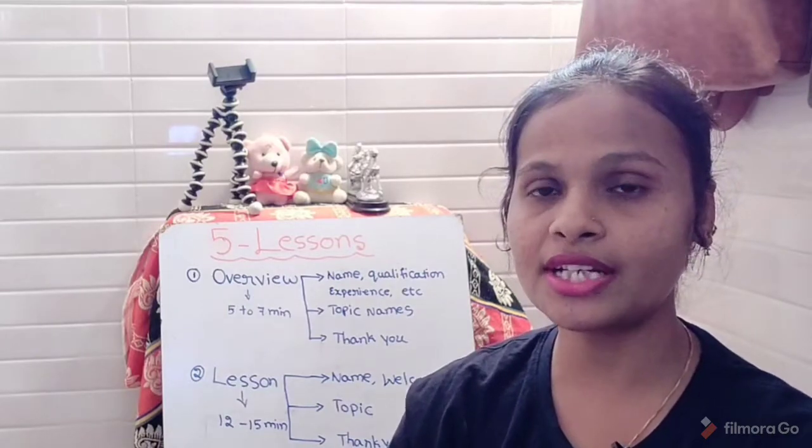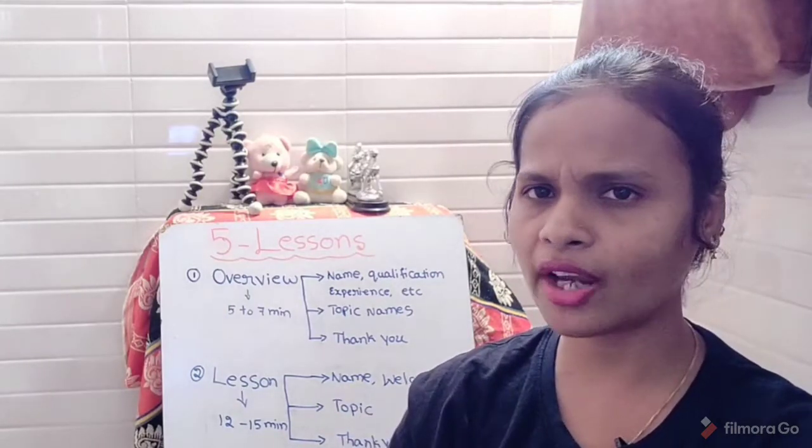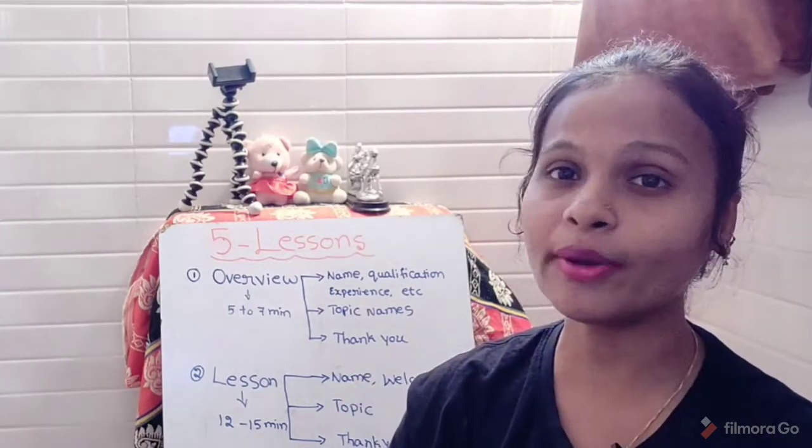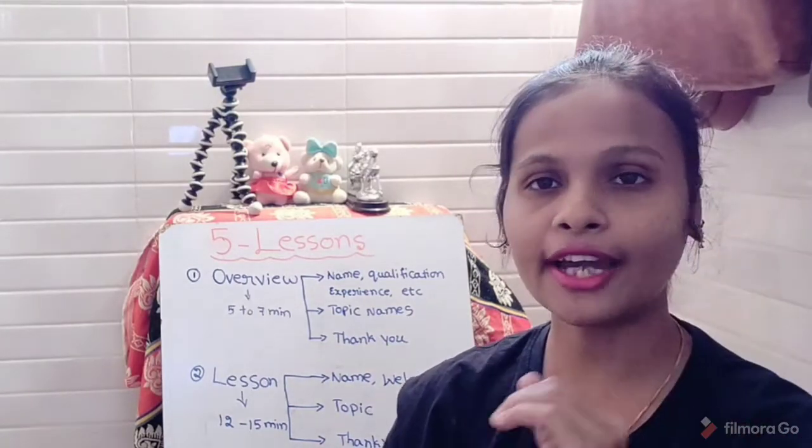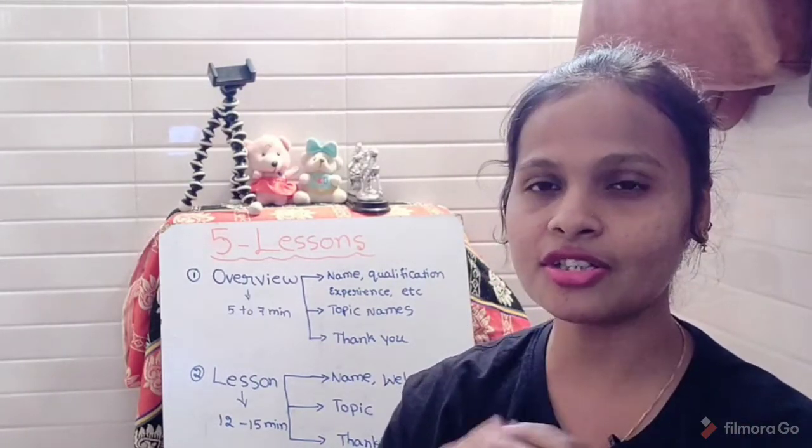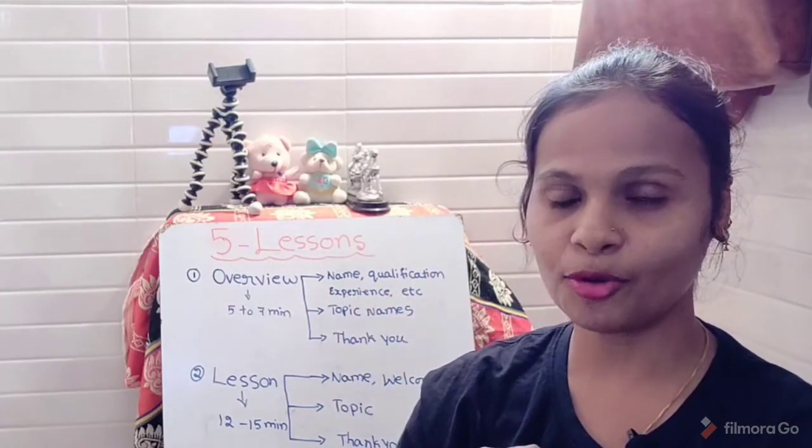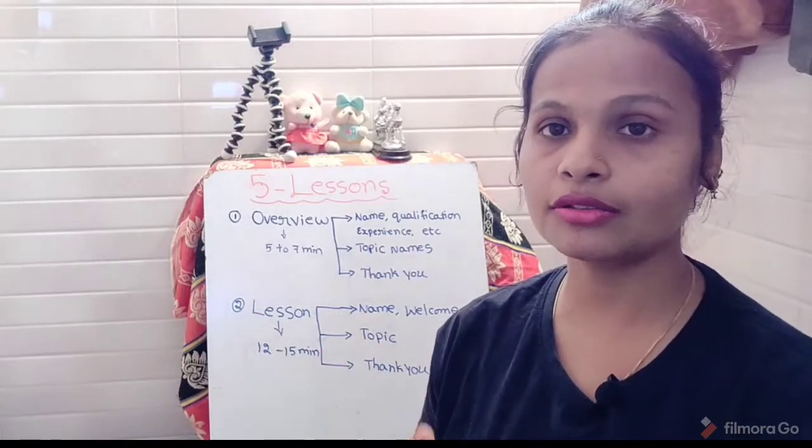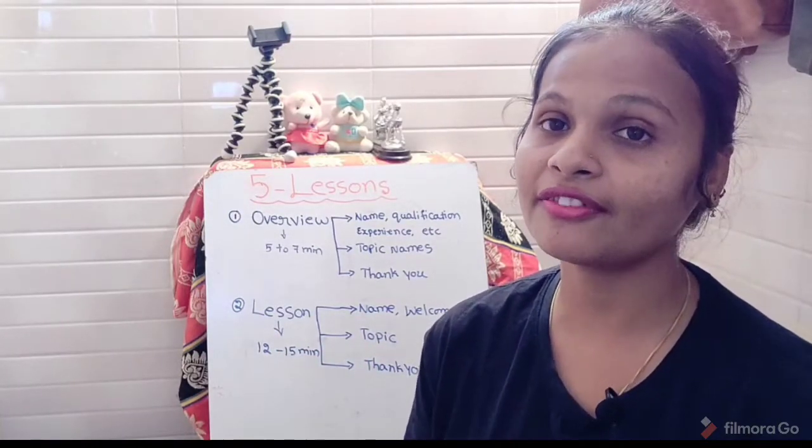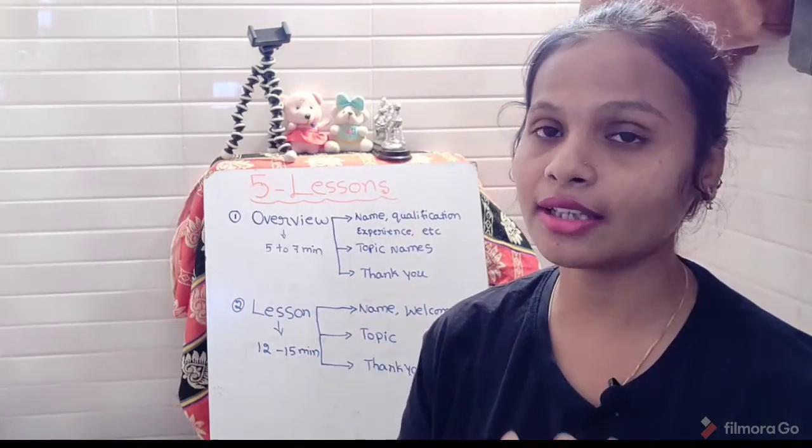12 to 15 minutes. If it is more than that, okay, no problem. But it should not be less than 12 minutes. So like that, you just make five lessons and you submit to the an academy platform. Follow all these steps while doing the full lessons course and definitely your course gets selected and it will be published in the an academy platform.